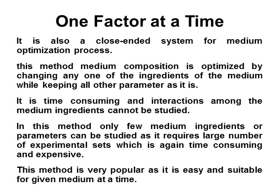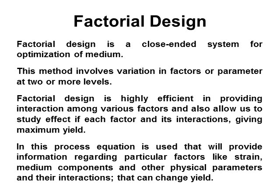The fifth method, factorial design, is very popular as it is easy and suitable for a given medium at a time. Factorial design is a closed-ended system for optimization of medium. This method involves variation in factors or parameters at two or more levels. Factorial design is highly efficient in providing interaction among various factors, and allows us to study the effect of each factor and its interactions, giving maximum yield. An equation is used that provides information regarding particular factors like strain, medium components, and other physical parameters, and their interactions that can change yield.